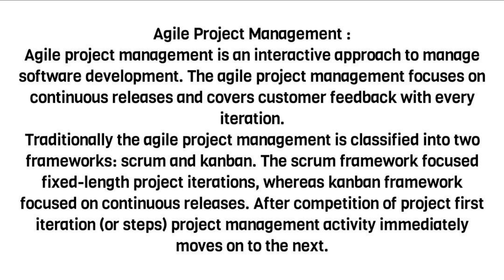Traditionally, Agile Project Management is classified into two frameworks: Scrum and Kanban. The Scrum Framework focuses on fixed-length project iterations, whereas the Kanban Framework focuses on continuous releases. After completion of a project's first iteration, or steps, project management activity immediately moves on to the next.